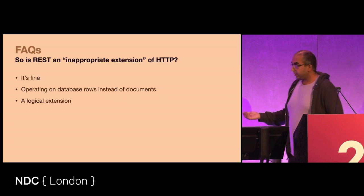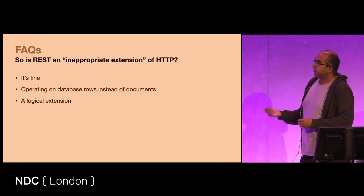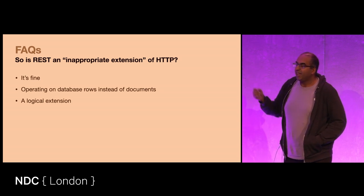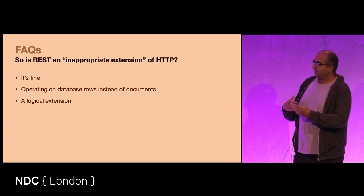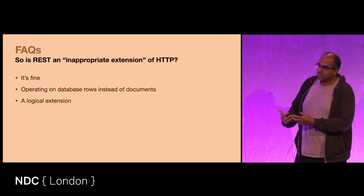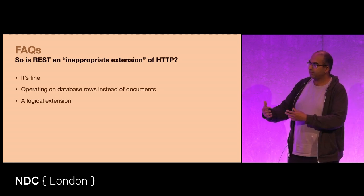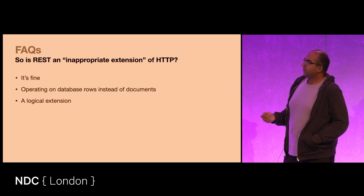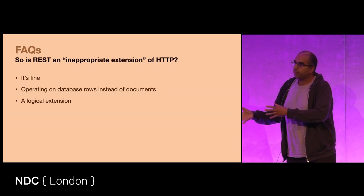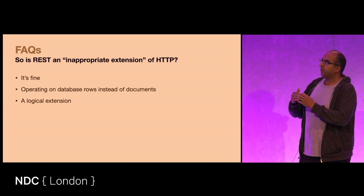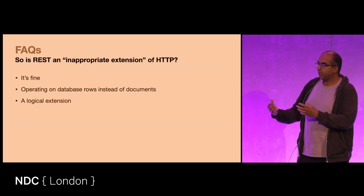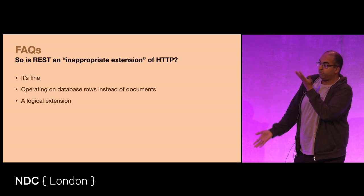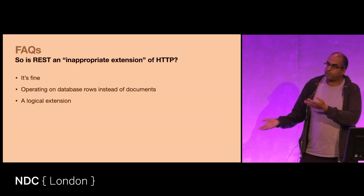Going back to the question we had at the start: are there inappropriate extensions of HTTP? Is REST an inappropriate extension? In my opinion, no. If you take the original HTTP — receiving documents, posting updates to documents, getting a list of documents — and you do that on database rows, you can map all of those things. You can get a particular database entry from a table, you can add new rows to the table, you can get a list of all rows in the table. So it maps as a logical extension.